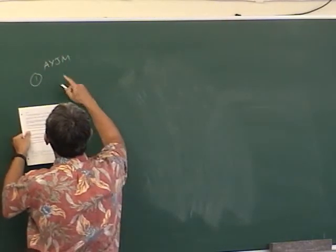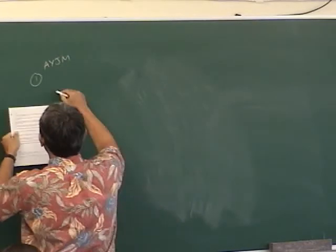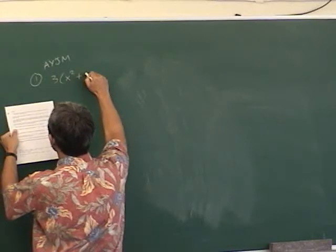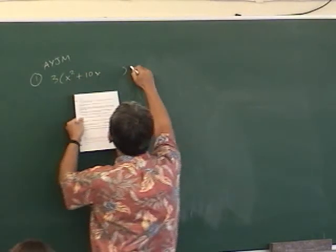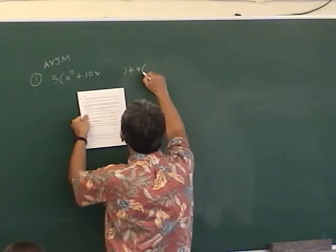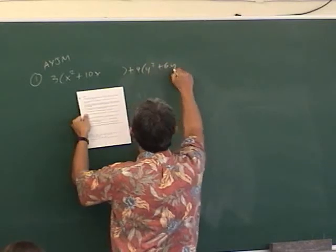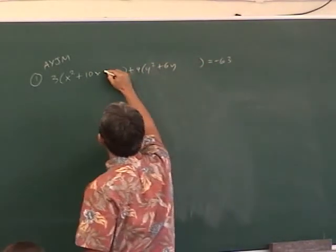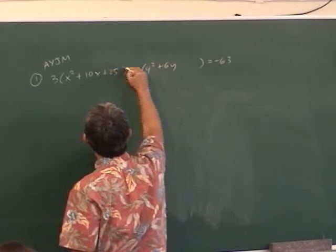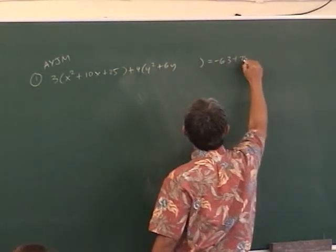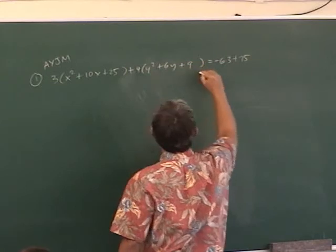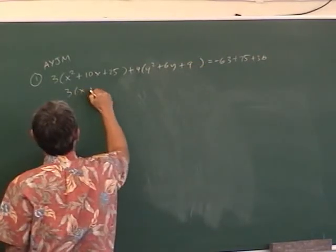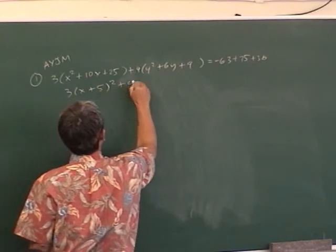Number one — are you joking me? Sometimes you take a test and you see this. So we need to complete the square. Three x squared plus ten x, and then the y's you can factor out of four, so you get y squared plus six y, leaving space, equals negative 63. You add 25 but you actually added 75.